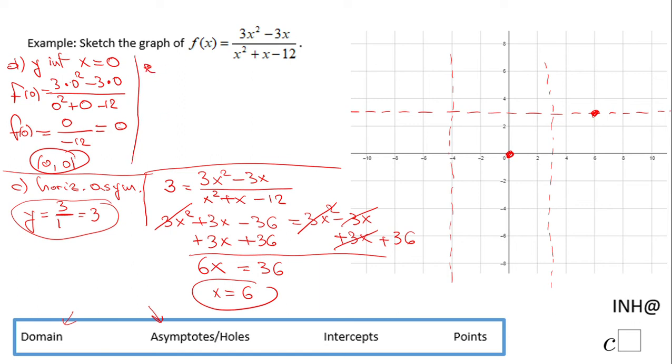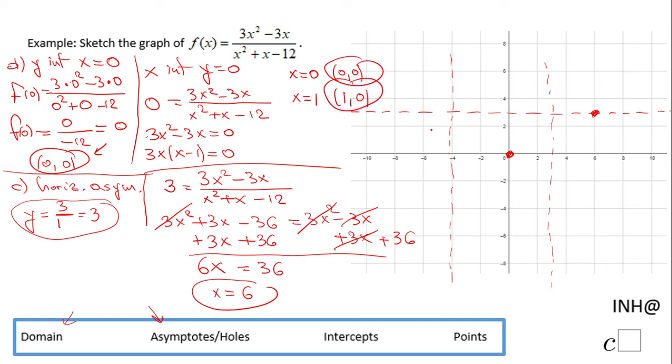Now let's move to the x-intercepts. For the x-intercepts, we're going to make the function equals to 0. So we have 0 equals 3x squared minus 3x over x squared plus x minus 12. When is this equals to 0? When the numerator, 3x squared minus 3x equals to 0. We already had the factor form: 3x times x minus 1 equals 0. That gives us two zeros. x equals 0, which we expected, and x minus 1 equals 0, which gives us x equals 1. So we have these two x-intercepts.